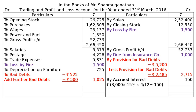The credit side total is Rs. 56,598. After deducting all expenses on the debit side, the Net Profit carried down is Rs. 37,716.